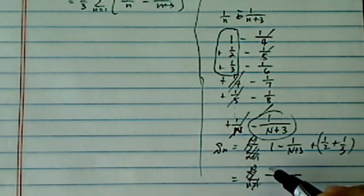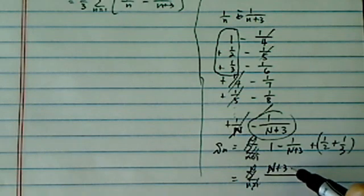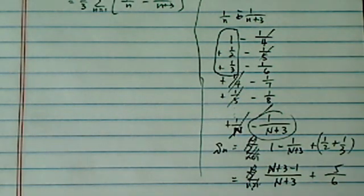So let's n plus 3 minus 1, n plus 3 plus 6 fifths.